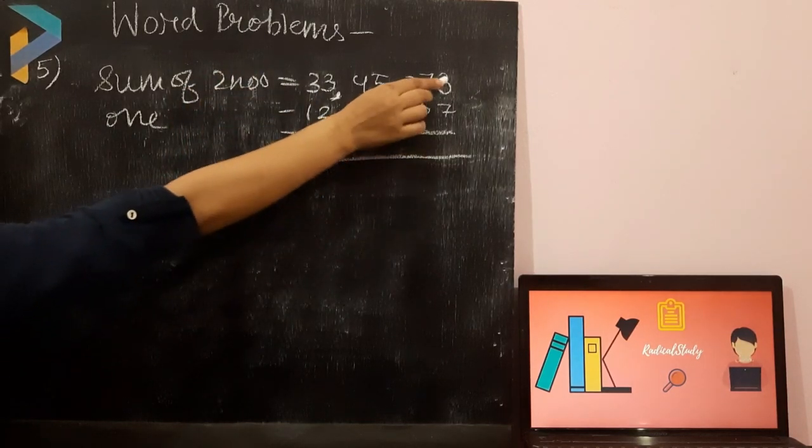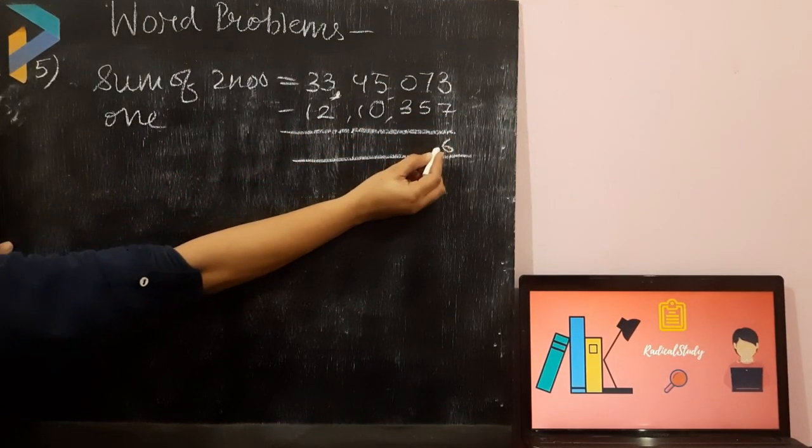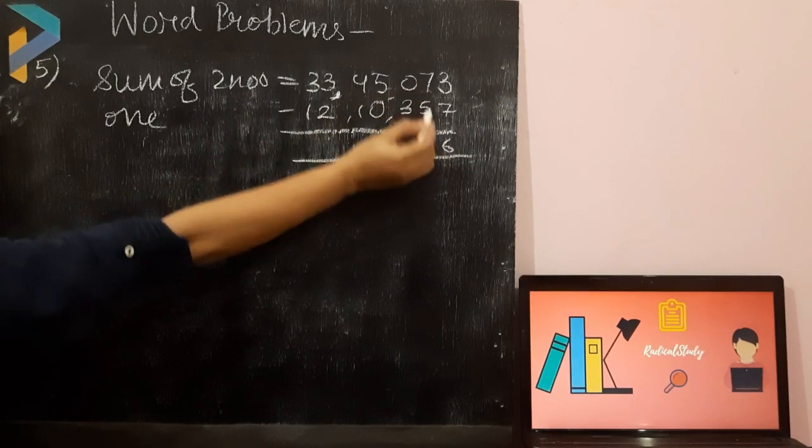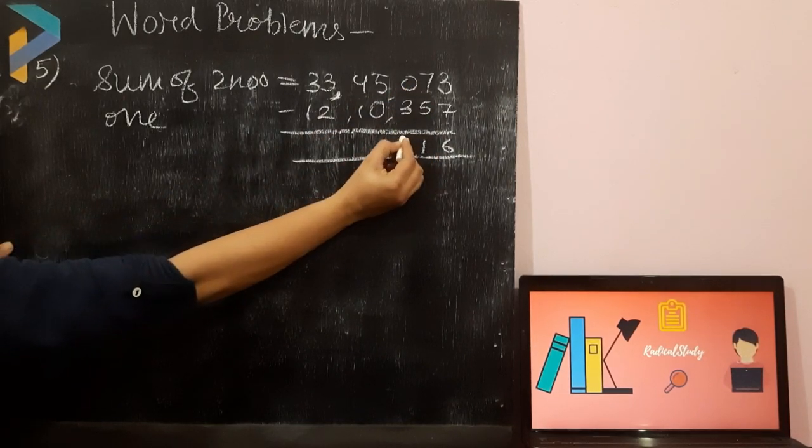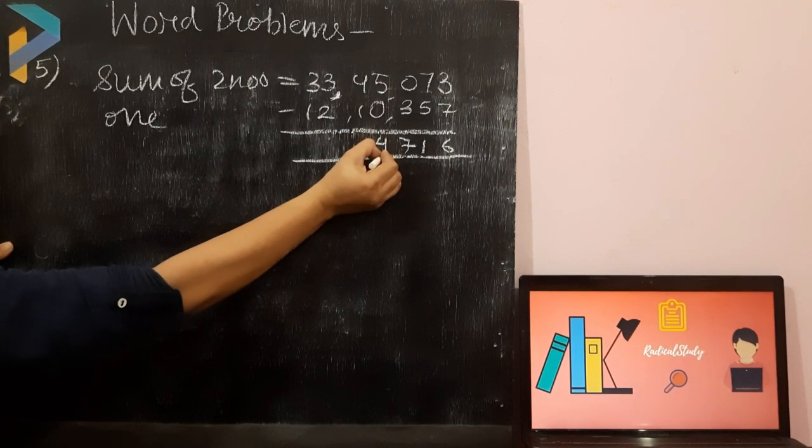I am going to subtract it with 3, minus 7. Firstly, we have to take carry. It will become 6 because 13 minus 7 is 6. It will become 6. 6 minus 5 is 1. 10 minus 3 is 7. And 4 minus 0 is 4.